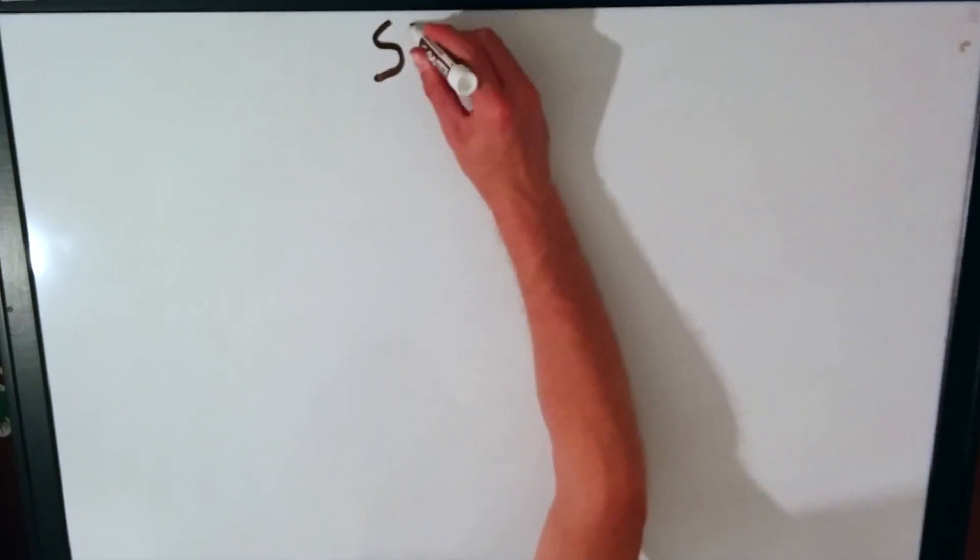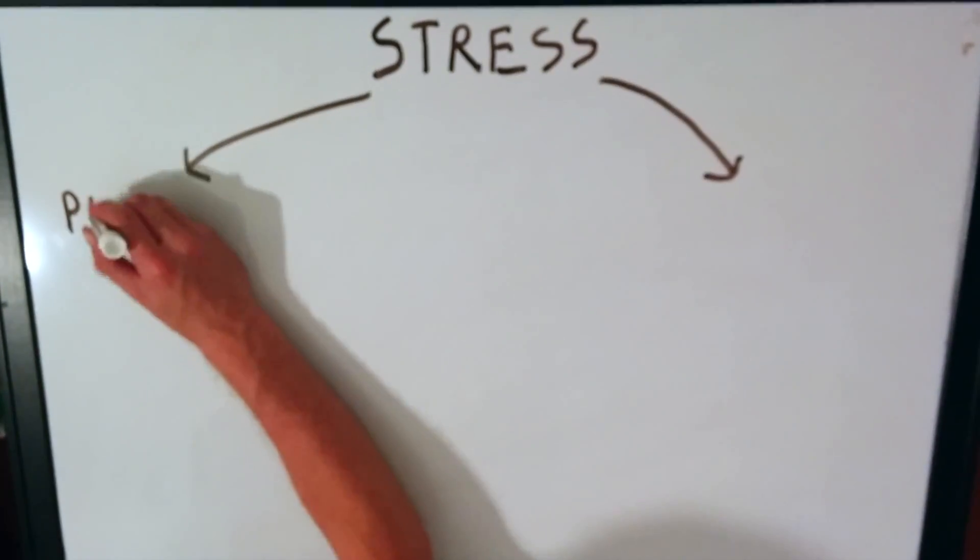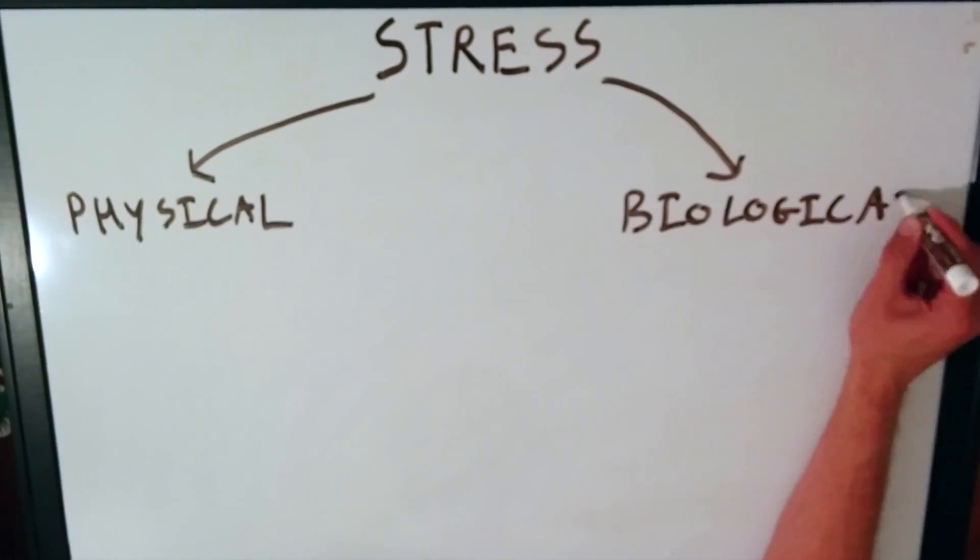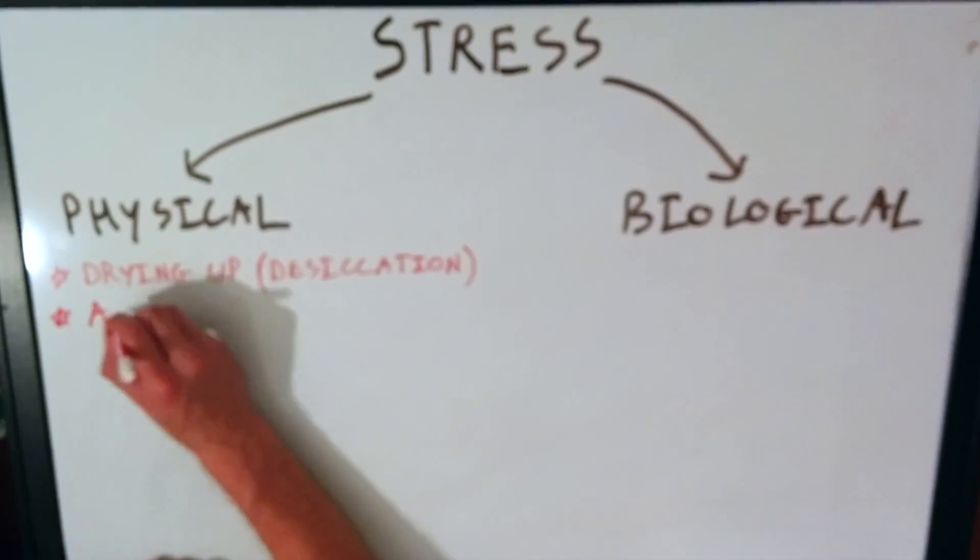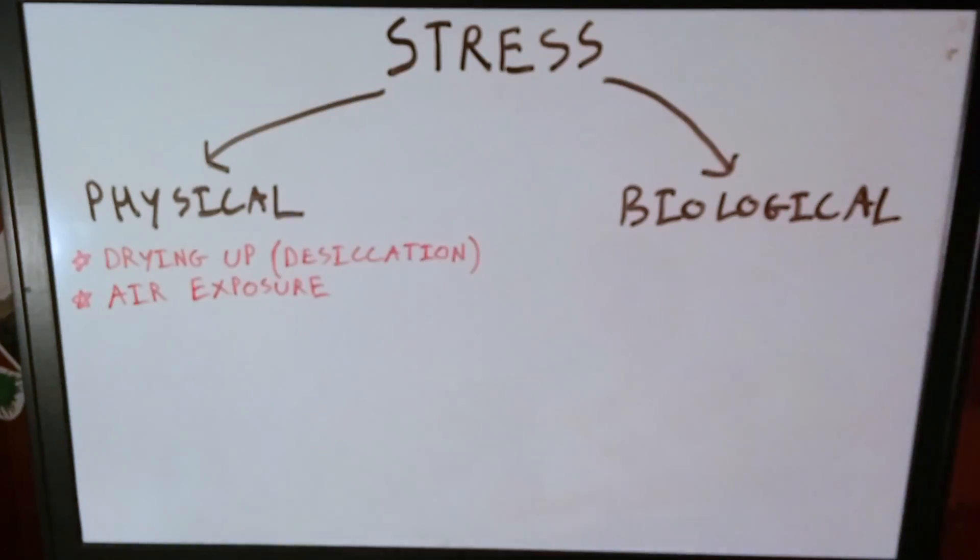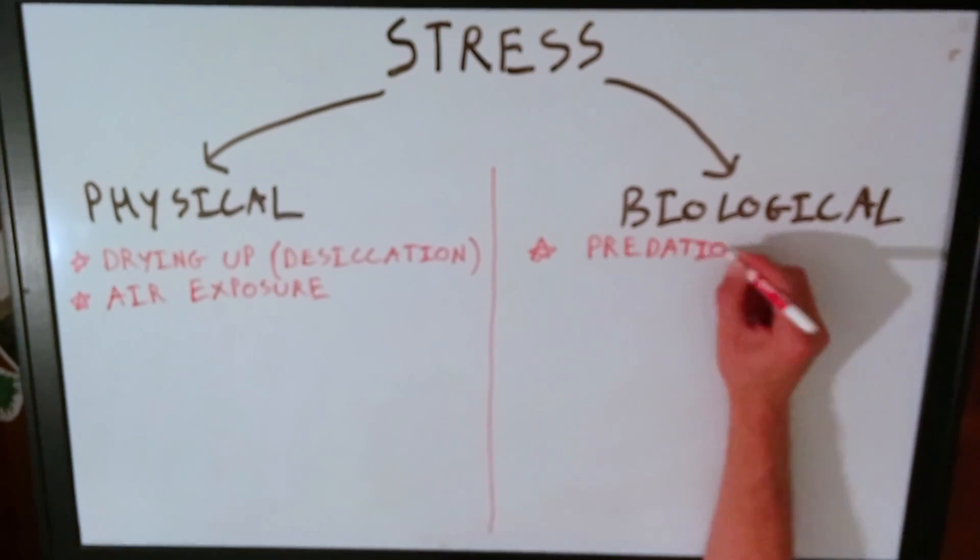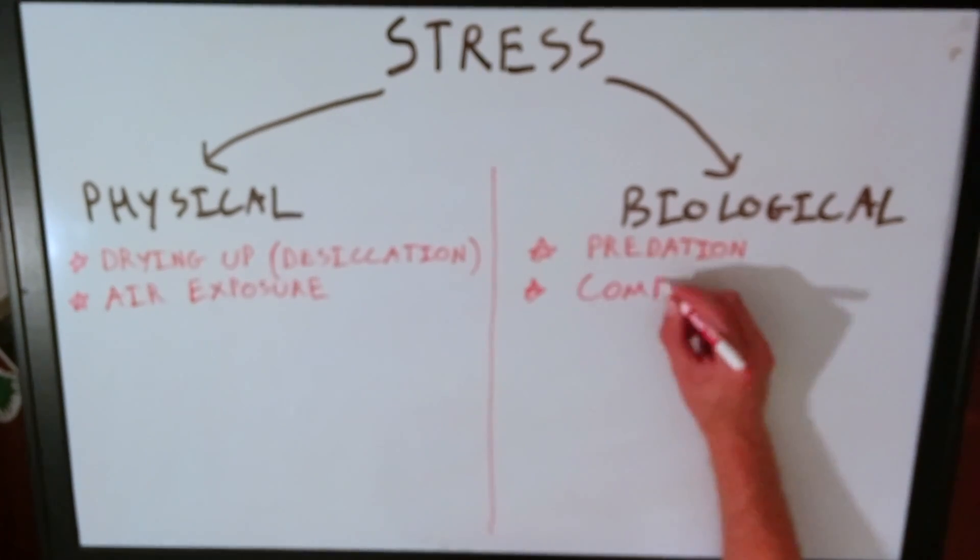In the intertidal zone, there are two main types of stresses: physical and biological. Physical stress includes things like desiccation or exposure to air, while biological stresses are things like predation and competition between the different species.